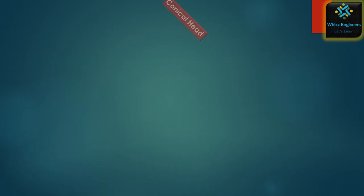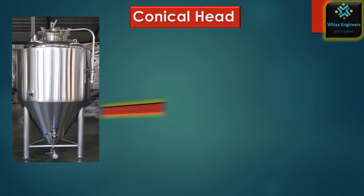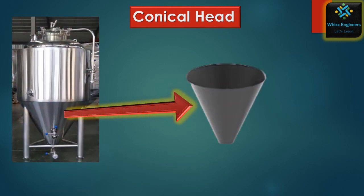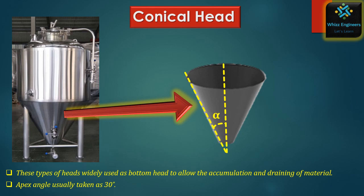The fourth type is the conical head, as shown in the picture. These heads are mostly used as the bottom head for accumulation and removal of process material. The apex angle is usually taken as 30 degrees.